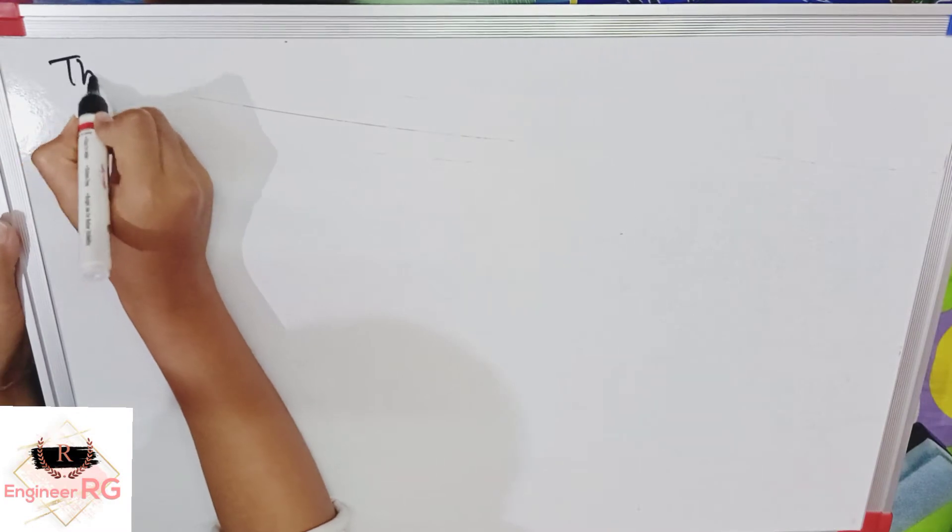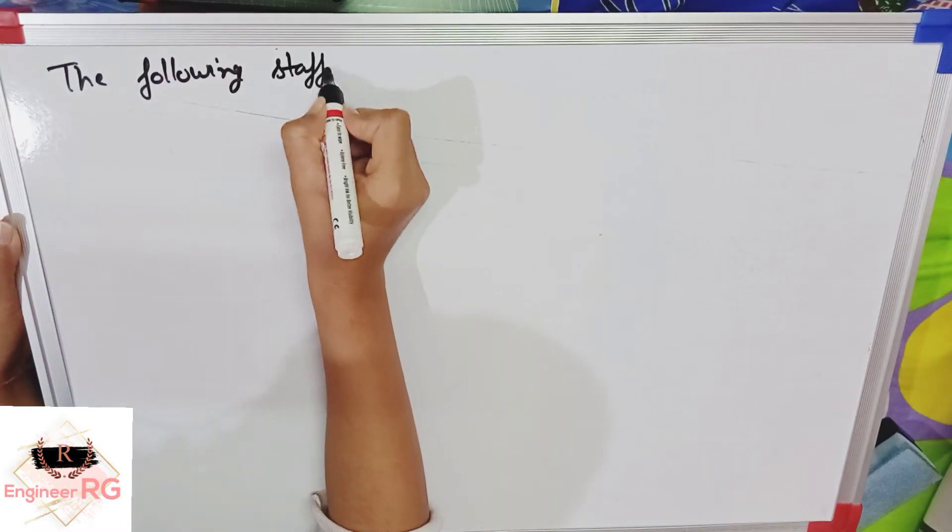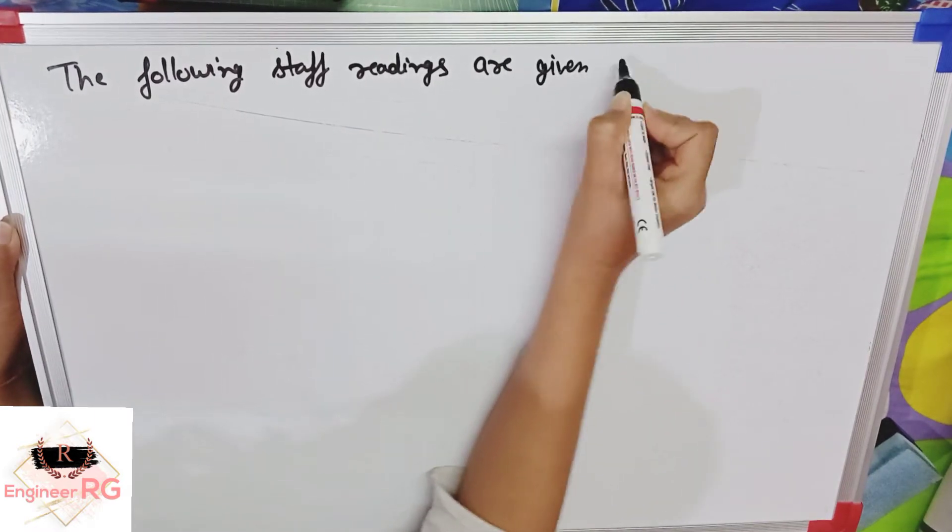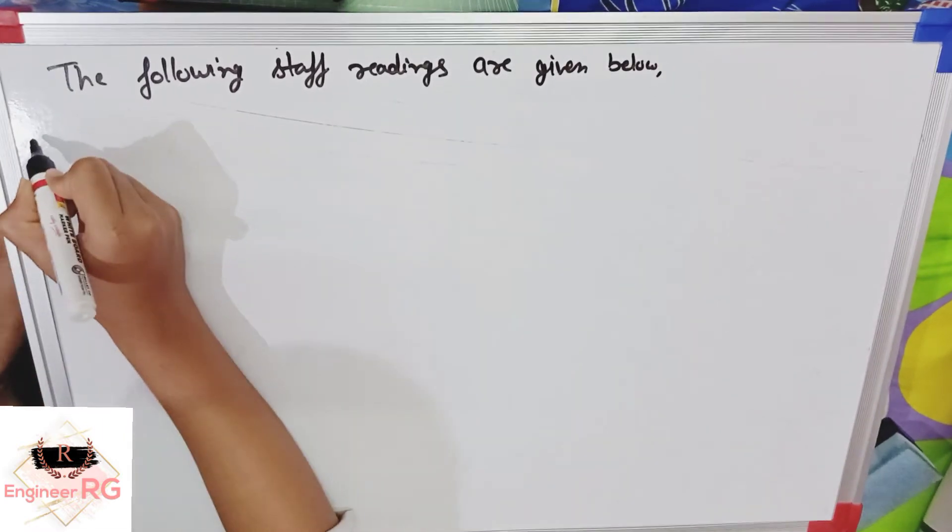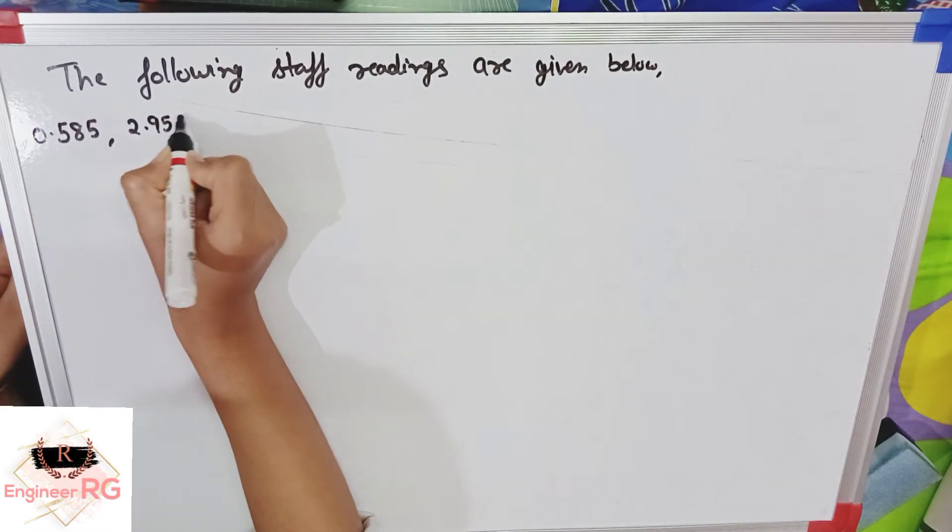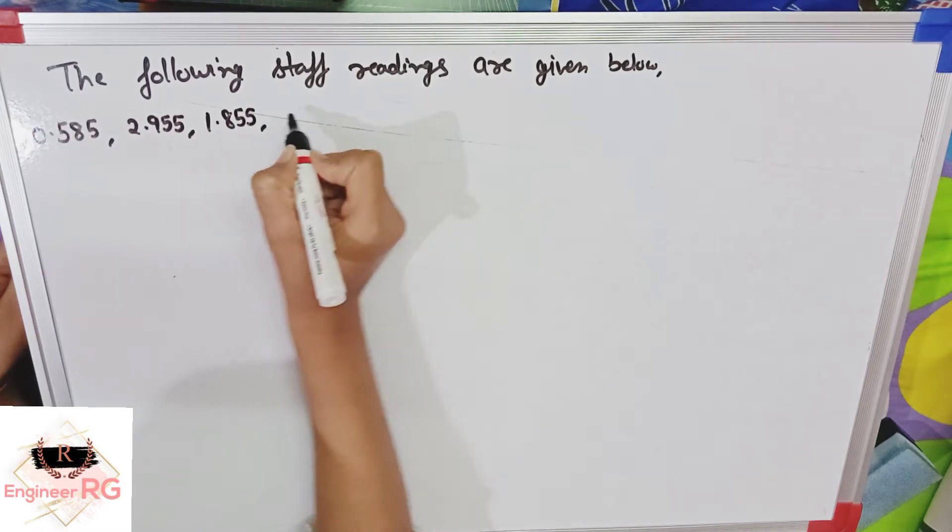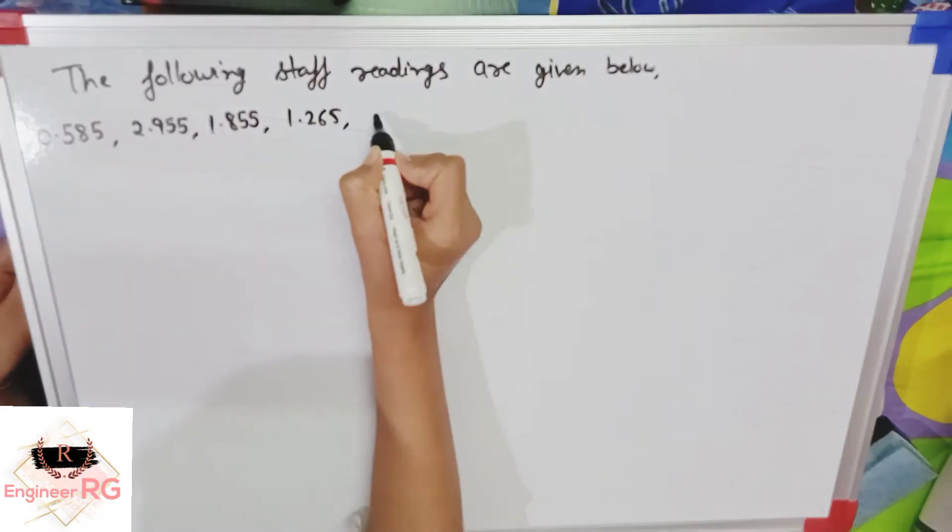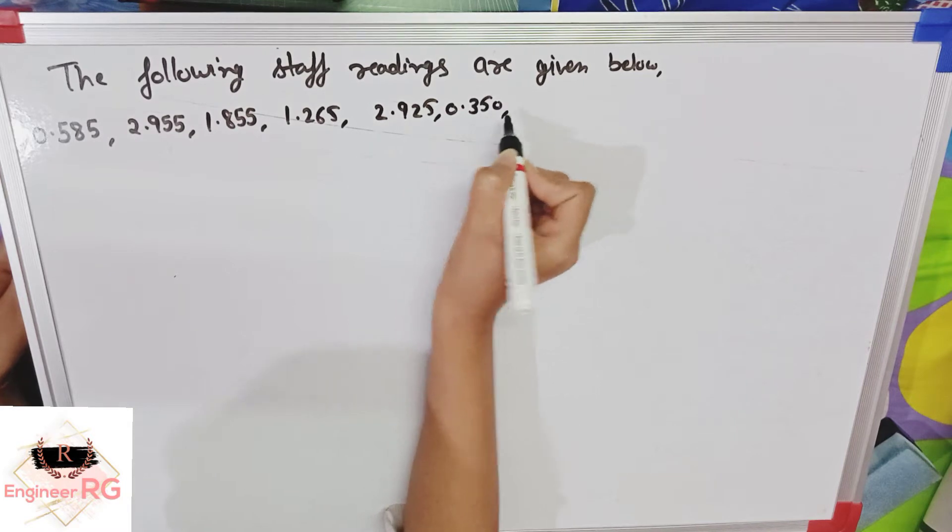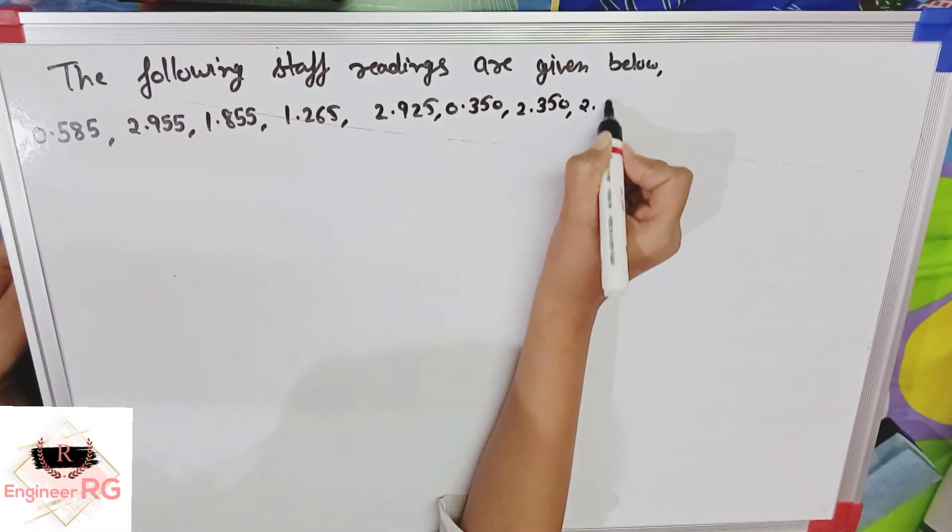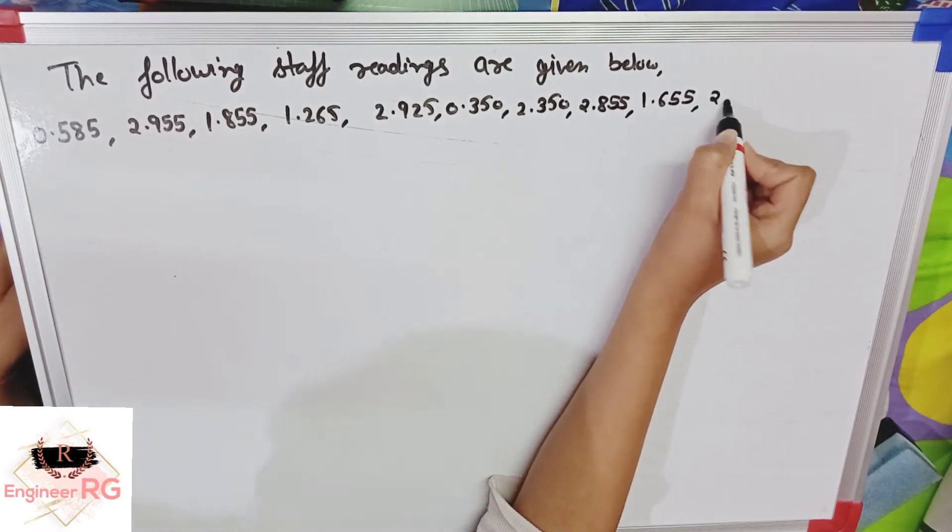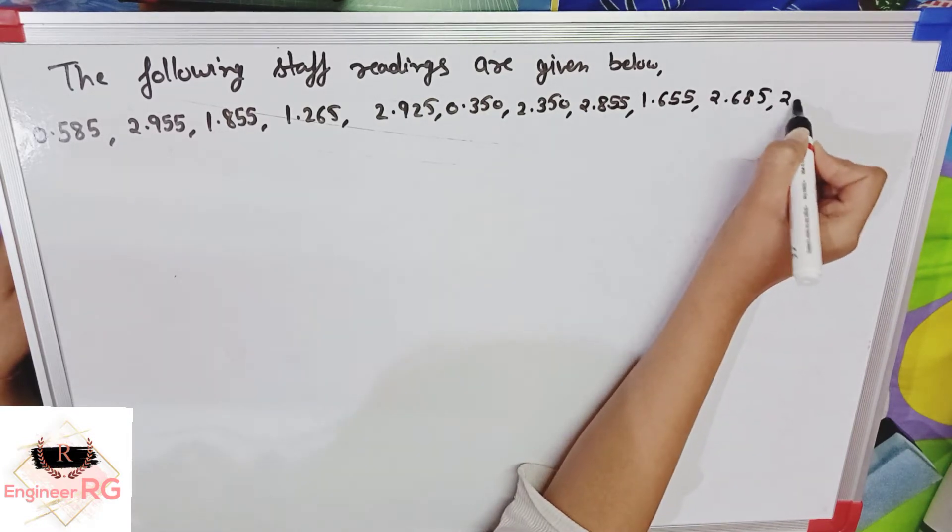The question is, the following staff readings are given below: 0.585, 2.955, 1.855, 1.265, 2.925, 0.350, 2.350, 2.855, 1.655, 2.685, 2.435.